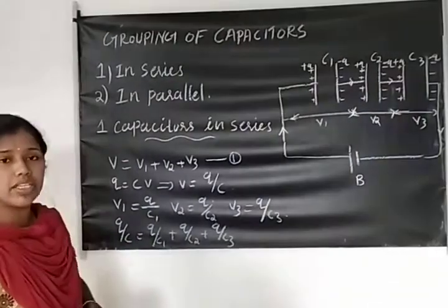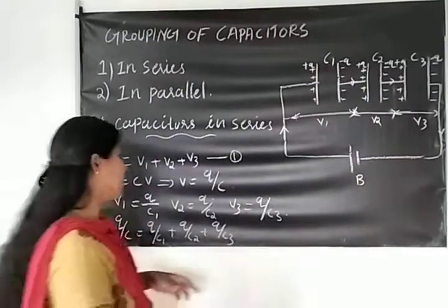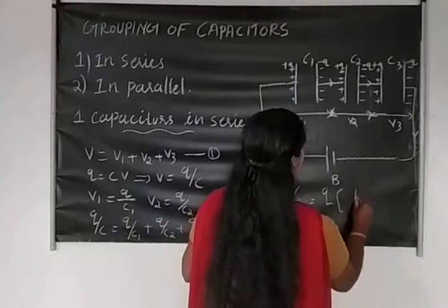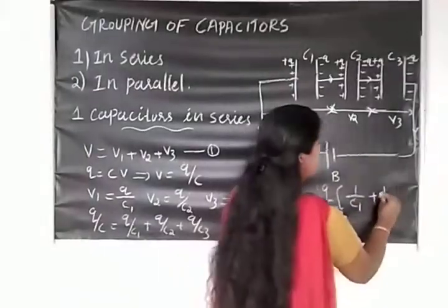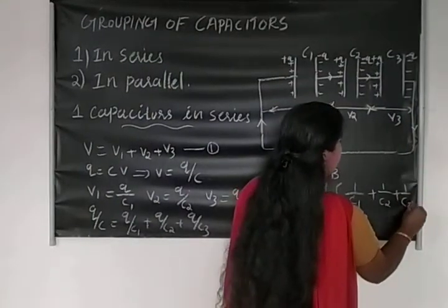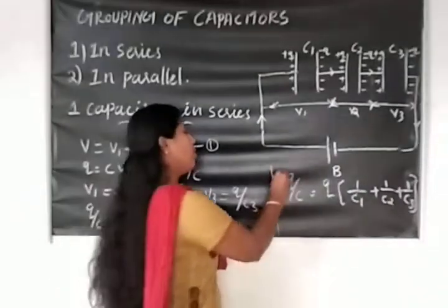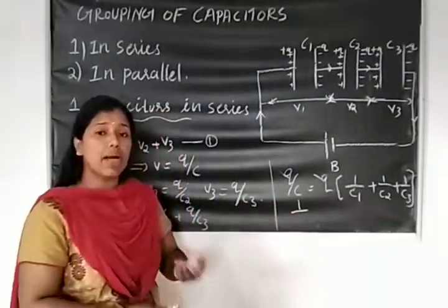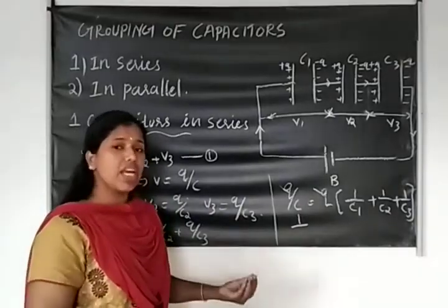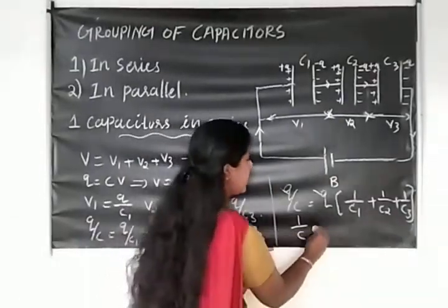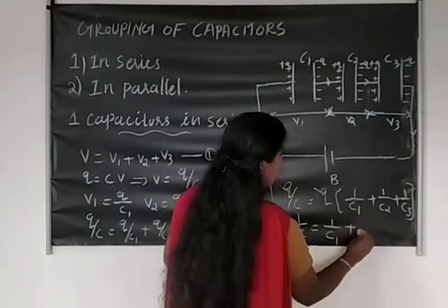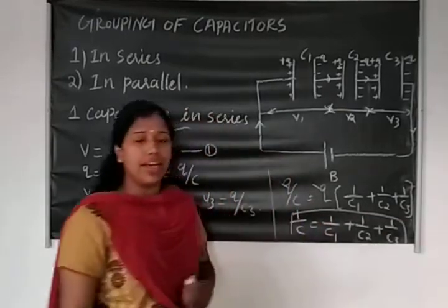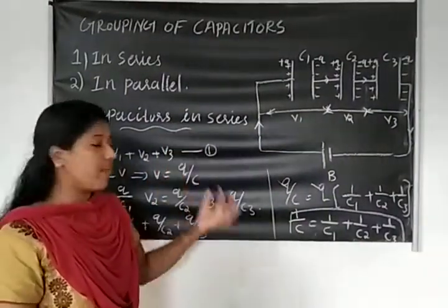Which term is common? Q is common, so we can take it outside. After cancelling Q, the effective or total capacitance gives us the final equation: 1 by C is equal to 1 by C1 plus 1 by C2 plus 1 by C3.